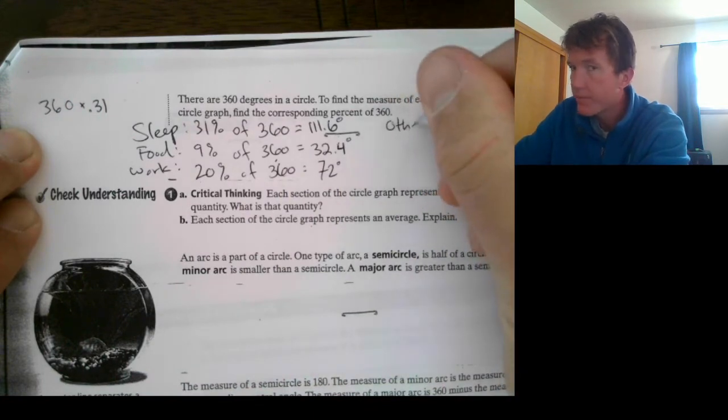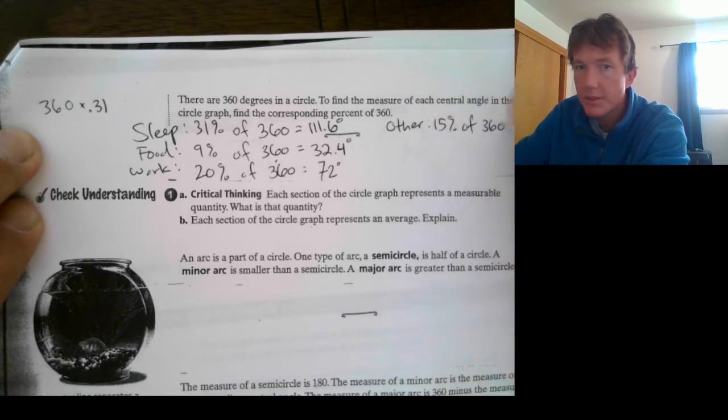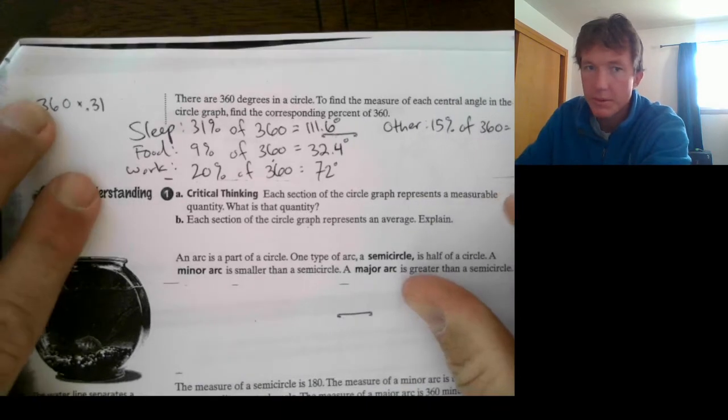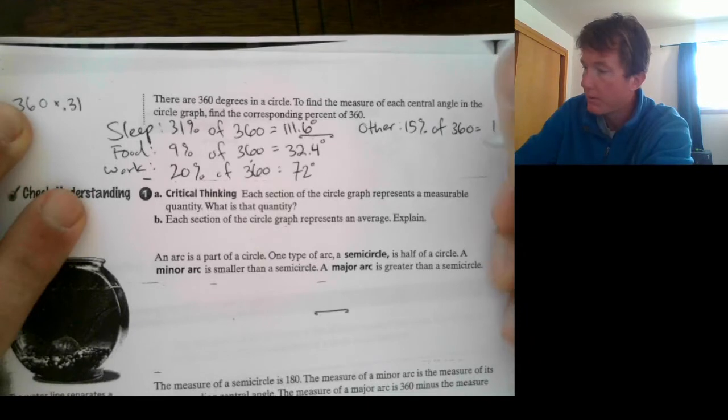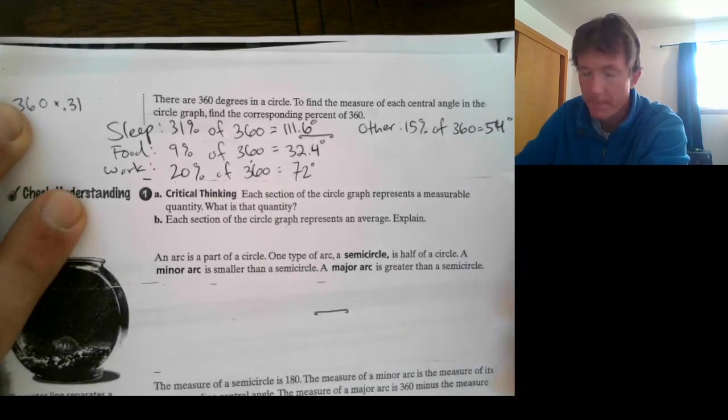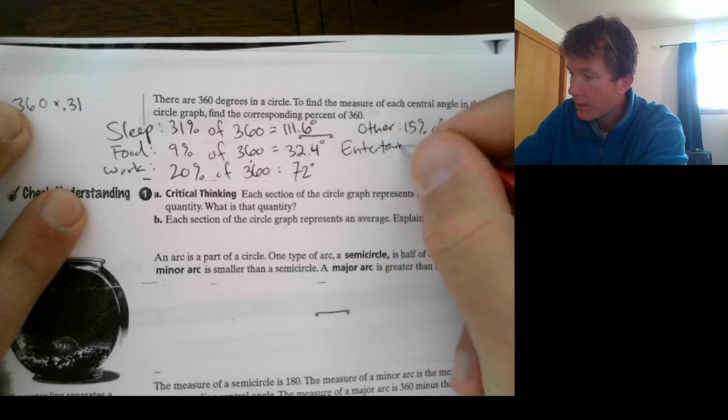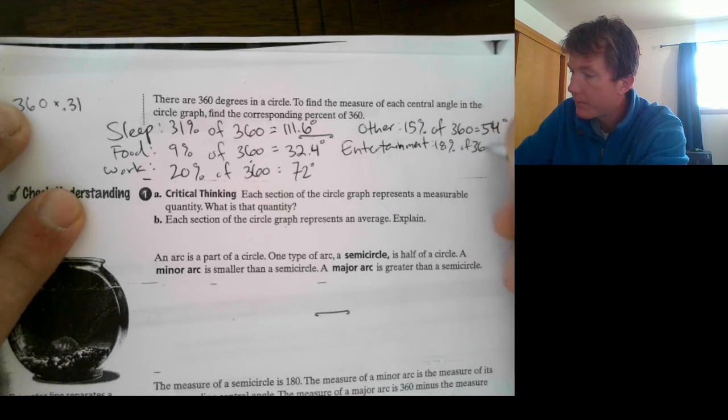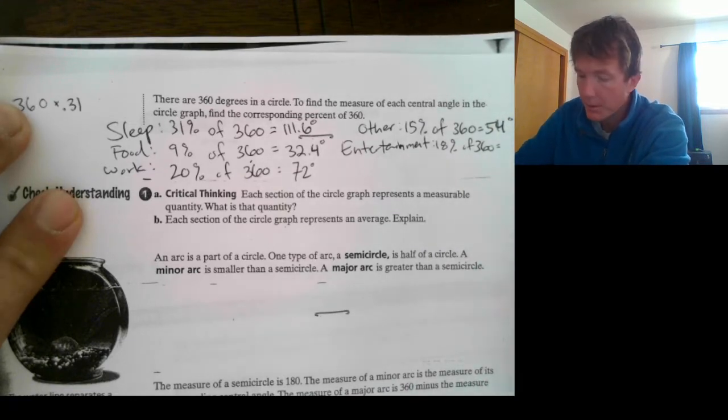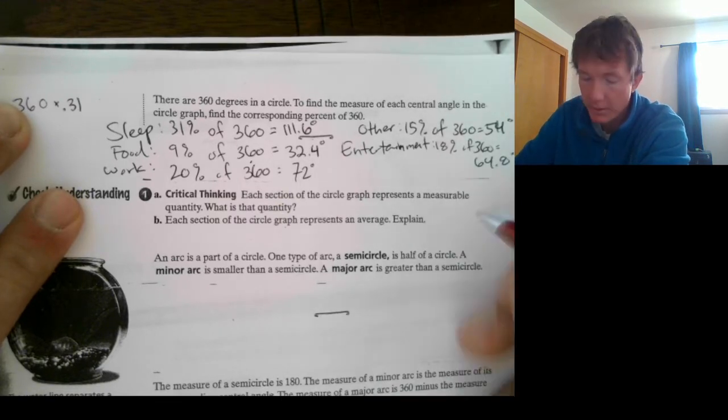Other. Other was 15% of 360. That's equal to 54 degrees. Entertainment. They're talking about TV. That's a heck of a long time to be watching TV. But apparently, so that was 18% of 360. Nowadays, we wouldn't call this TV. We would call it social media. Cell phones. That was 64 degrees.